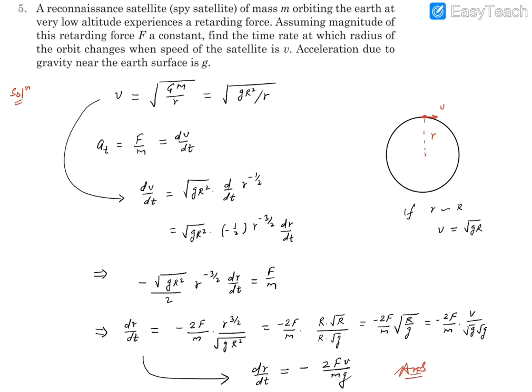The minus sign says that the radius is decreasing. F is the constant force, m is the mass of the satellite, V is the speed at that instant when we are finding this radius change. That's our answer.